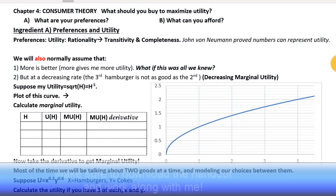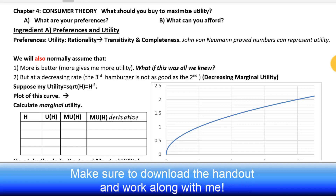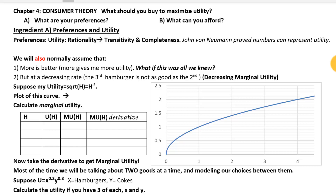Welcome to my second video on utility theory and utility maximization. In the first video we did an overview using a table to get a basic idea of some of the moving parts that go into utility maximization. What we're going to be focusing on today is just the utility part — we're not going to be looking at the budget constraint. We're really going to make sure we understand the utility function, how utility is measured, marginal utility, and all that.